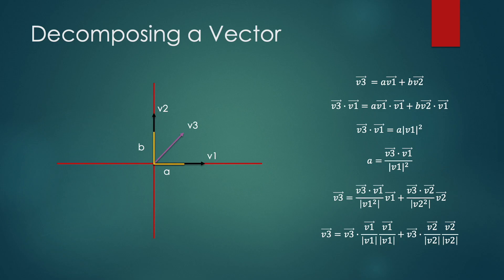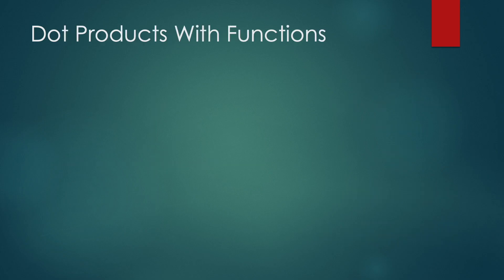So yeah, that should help you understand why those coefficients come out to what they do. And the reason we can perform this math is because v1 and v2 were orthogonal.